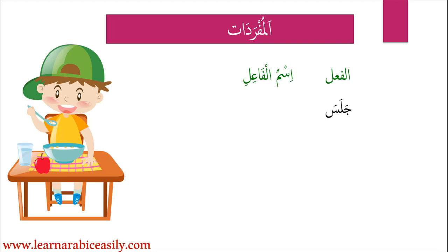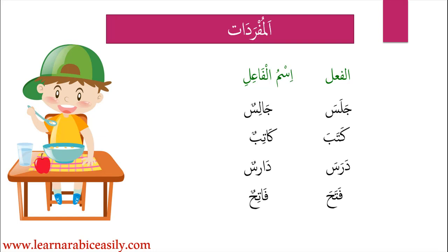جَلَسَ means 'he sat.' To form the active participle — اسم الفاعل — it becomes جَالِسٌ, meaning 'the one who is sitting.' Similarly, كَتَبَ means 'he wrote,' and the active participle is كَاتِبٌ, meaning 'the writer.' دَرَسَ means 'he studied,' and دَارِسٌ means 'a student' or 'someone who studies.' فَتَحَ means 'he opened,' and فَاتِحٌ means 'the opener.' Thank you so much — we meet in the next class.